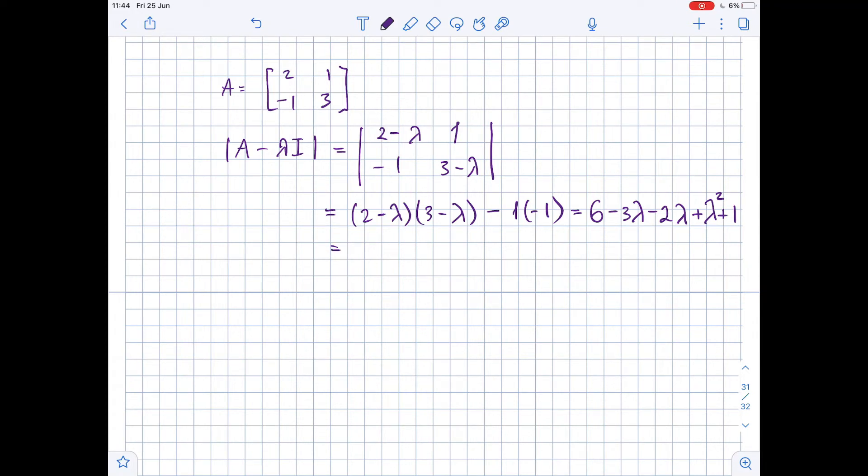This equals 6 minus 3 lambda minus 2 lambda plus lambda squared plus 1. So, this equals lambda squared minus 5 lambda plus 7. The characteristic polynomial is f of lambda, which equals lambda squared minus 5 lambda plus 7.